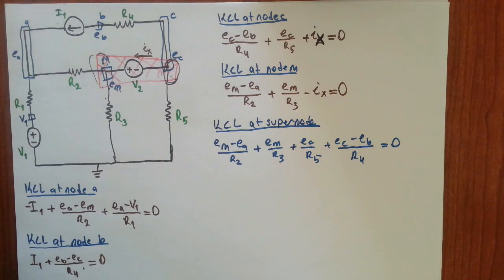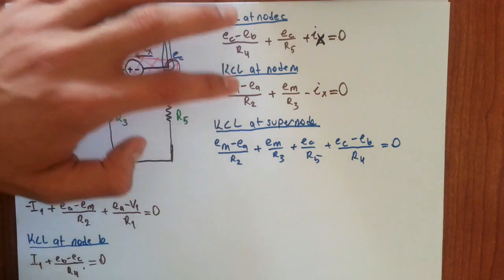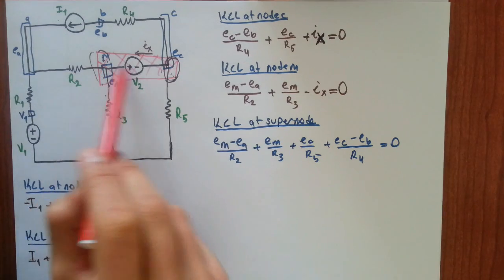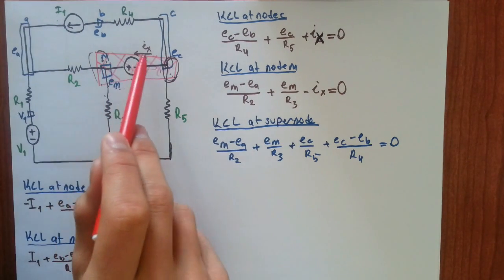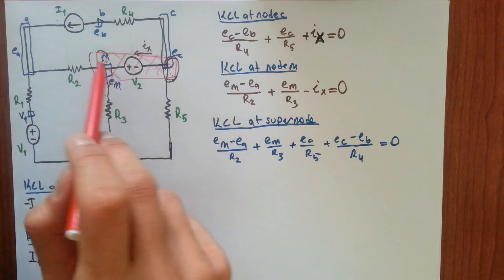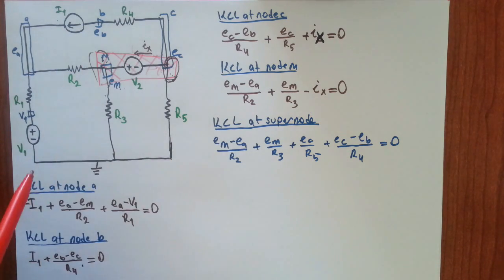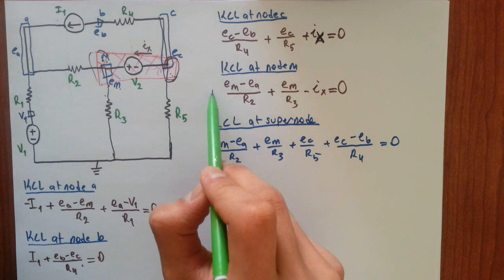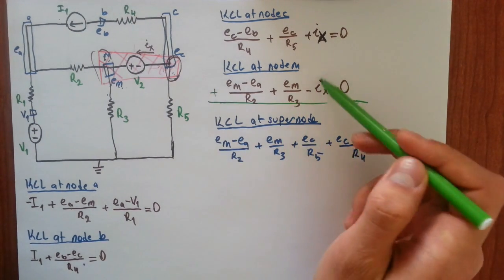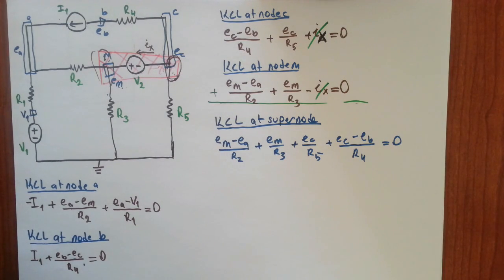Notice the similarity: the super node equation is actually the sum of the two previous node C and node M equations. When you sum them, Ix cancels, and you get this super node equation. We haven't done anything fancy — we've just constructed a super node to omit the unnecessary variable Ix.